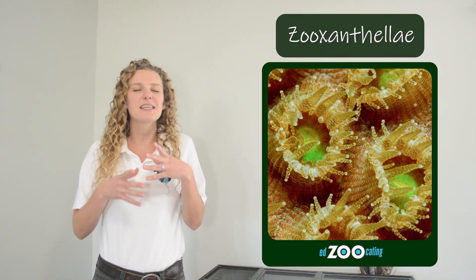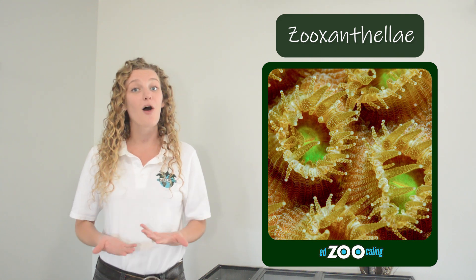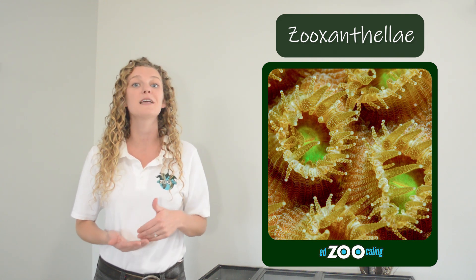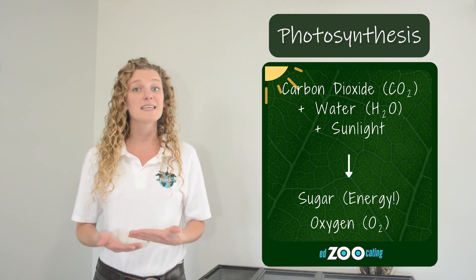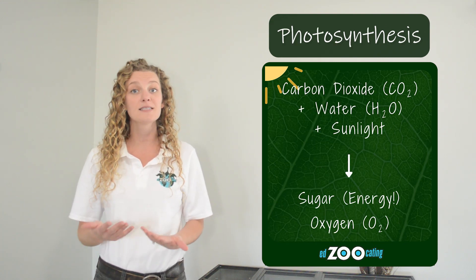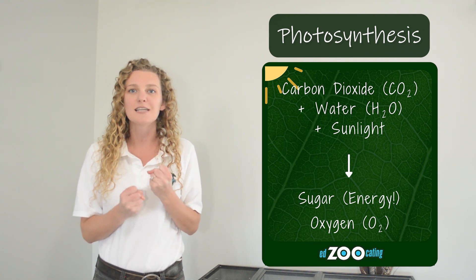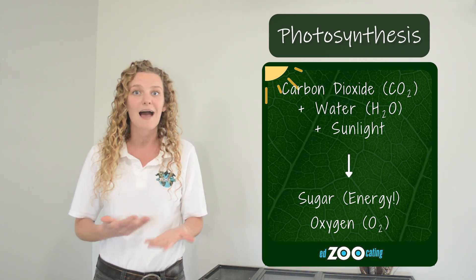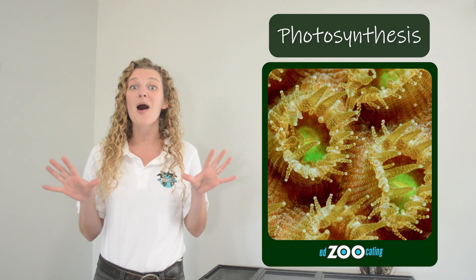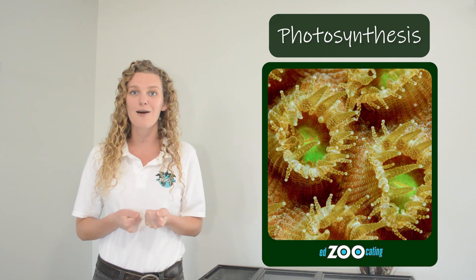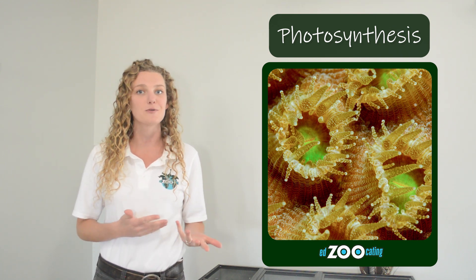Most corals are home to a microscopic little algae called zooxanthellae. Zooxanthellae lives within the tissue of the polyps and, like all algae, gets its energy from the sun using photosynthesis. Photosynthesis is a process used by algae and plants which takes energy from the sun and converts it into sugar or usable energy. The polyps get to take some of that energy from the algae, and in return give the algae some nutrients. This zooxanthellae is also the thing that gives corals their bright beautiful colors.